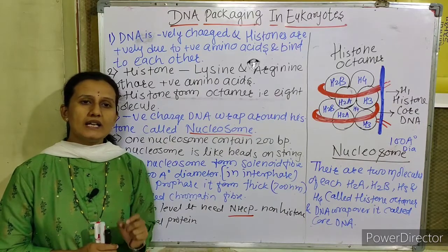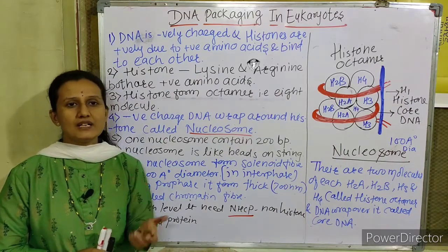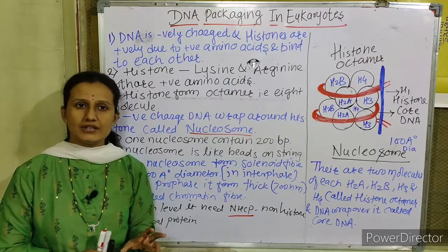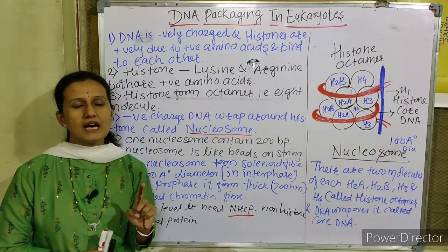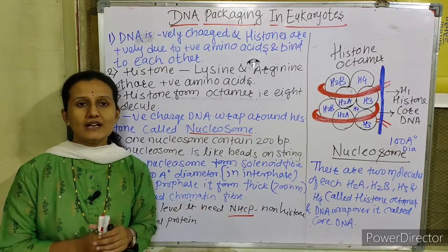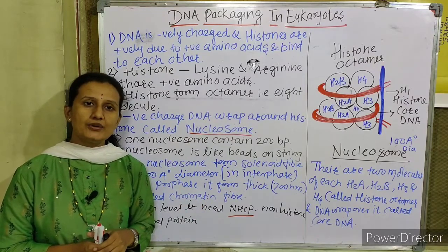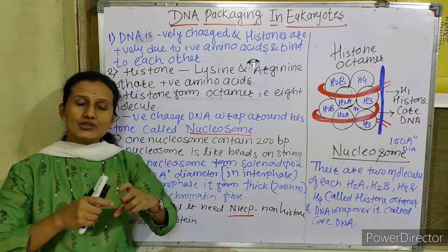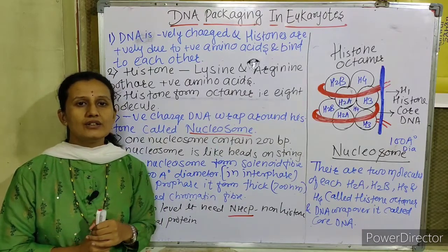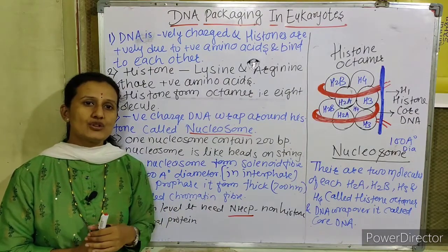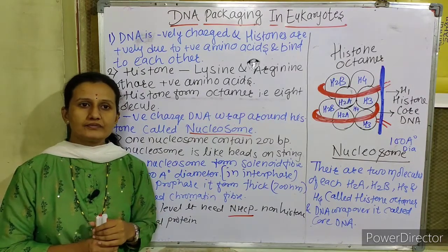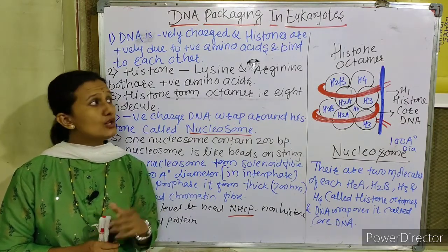DNA is packaged by coiling and supercoiling, by twisting and supertwisting, by condensation and dehydration. Through condensation, the density of the molecule increases, molecules dehydrate, and then twist and supertwist, resulting in the formation of a very thick, complex DNA structure.